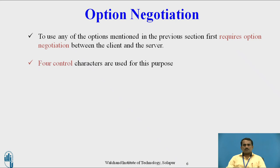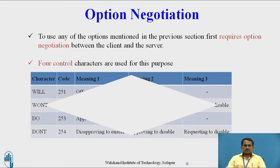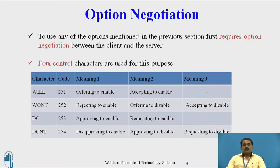Option negotiation means checking timing, operating system, and other parameters, then negotiating the data transmitting and receiving. Four control characters are used for this purpose, each having a character, code, and different meanings depending on the mode.